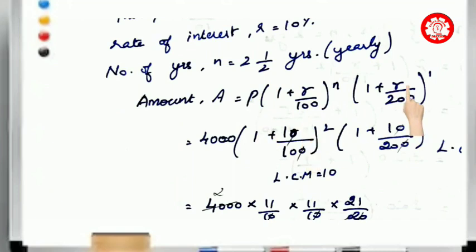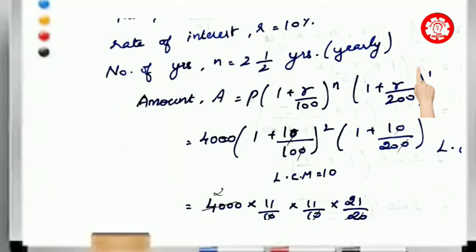The remaining half year is 6 months. So we handle the 2 full years with the compound interest formula, and then separately calculate simple interest for the remaining 6 months.